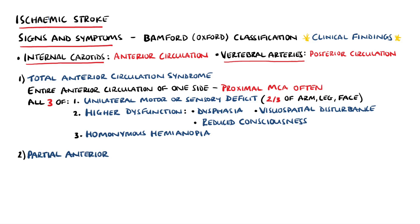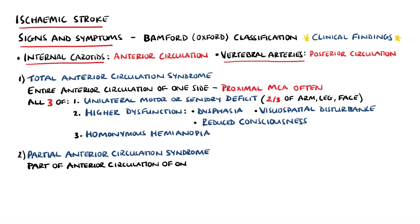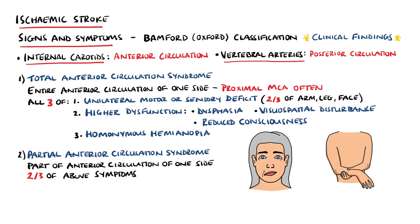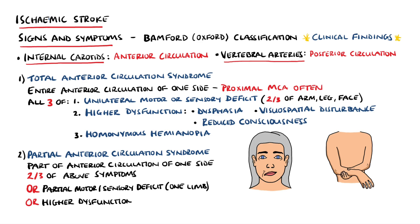Partial anterior circulation syndrome is a less severe form of the total anterior circulation syndrome, where only part of the anterior circulation has been compromised on the affected side. For this category, two out of three of the above-mentioned symptoms are needed, or the patient needs to have a partial motor or sensory dysfunction — typically affecting one limb — or higher dysfunction alone.